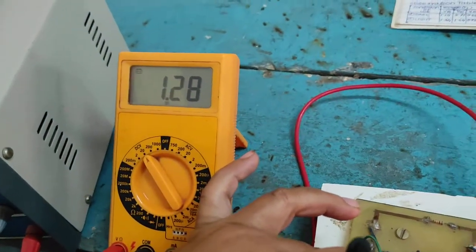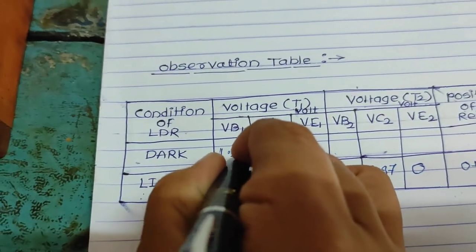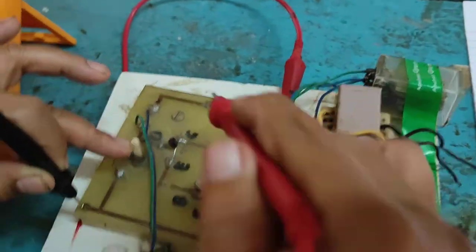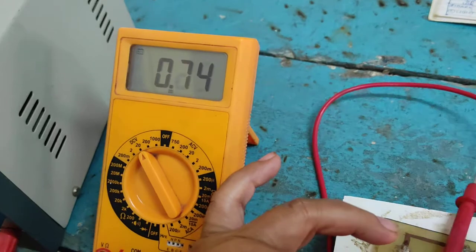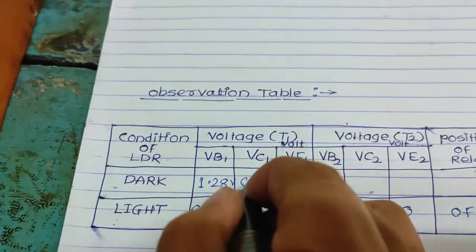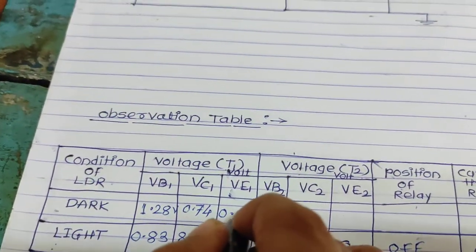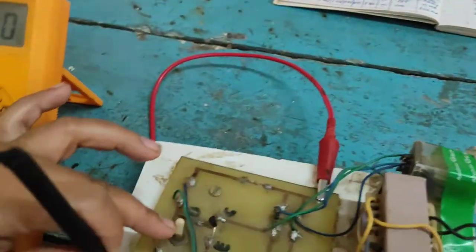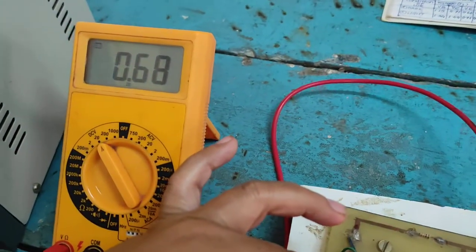Transistor T1, VB1 1.28 volt. VB1 0.74. VE1 0.69. Reading transistor T2 across VB2 0.69.